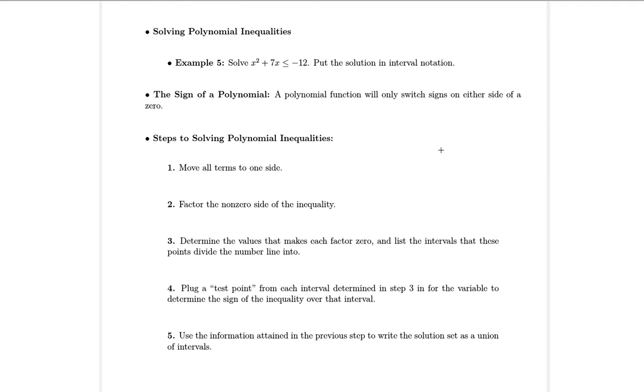The second type of non-linear inequality we're going to look at are polynomial inequalities. In example five, we want to solve x squared plus 7x is less than or equal to negative 12, and put the solution in interval notation.